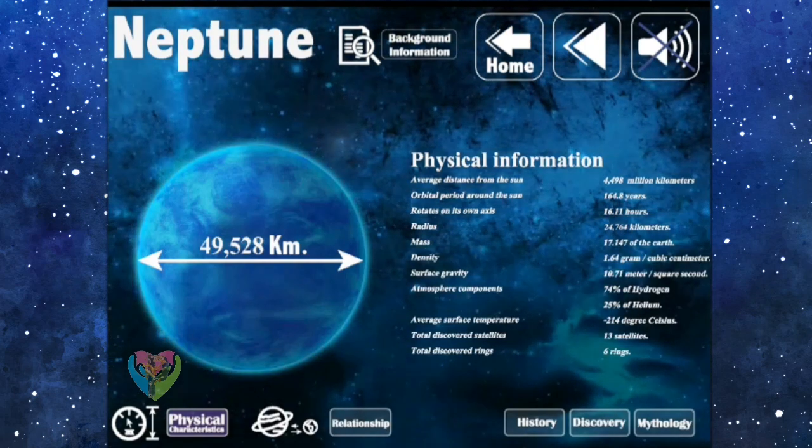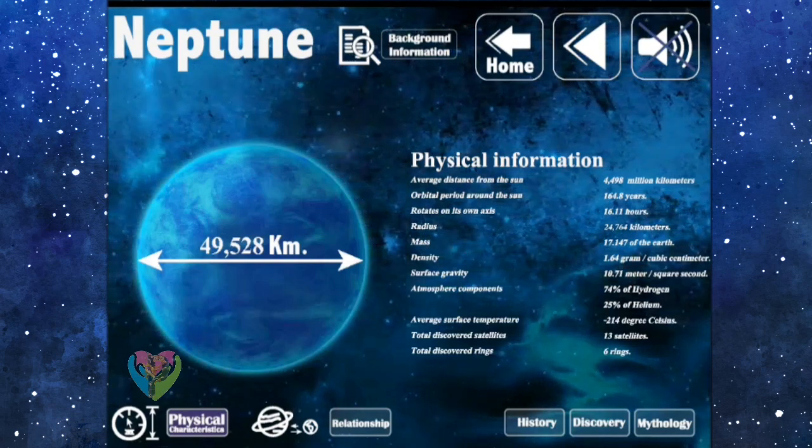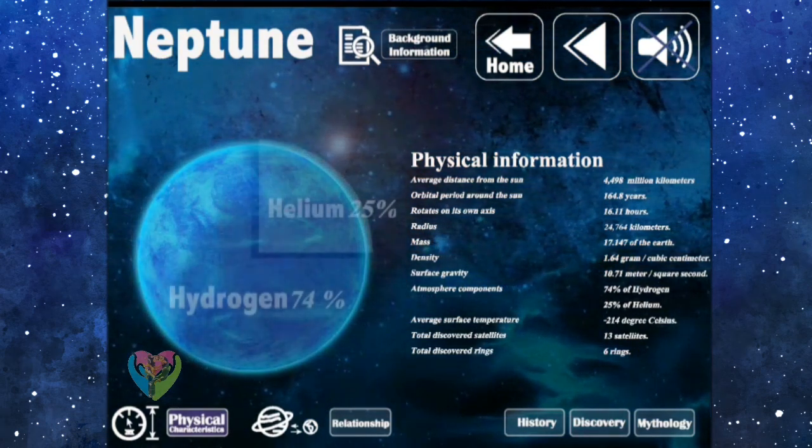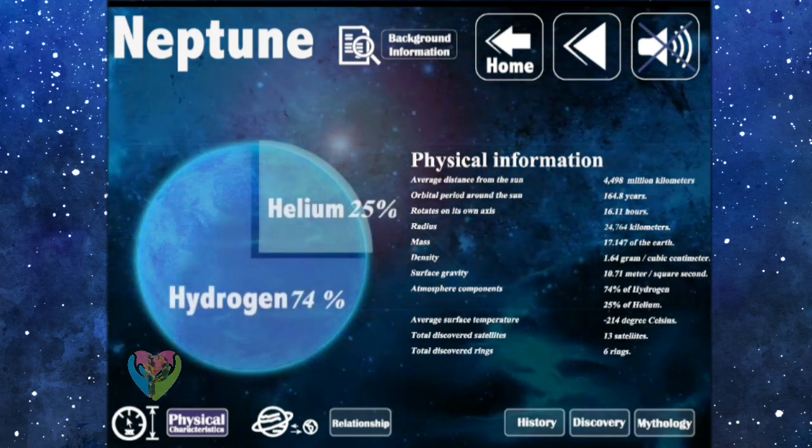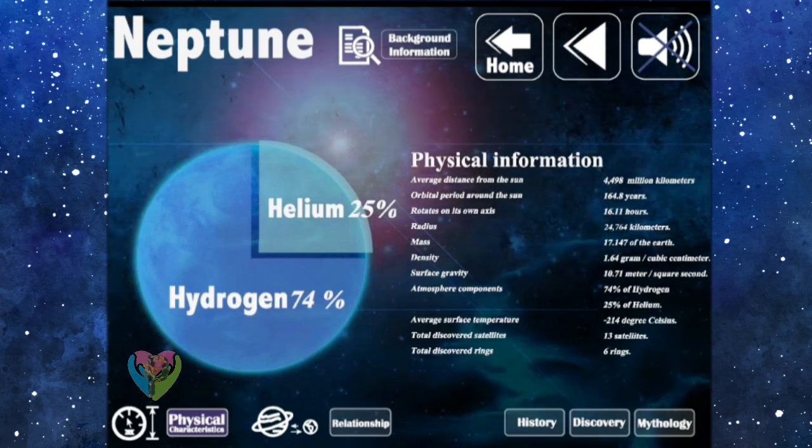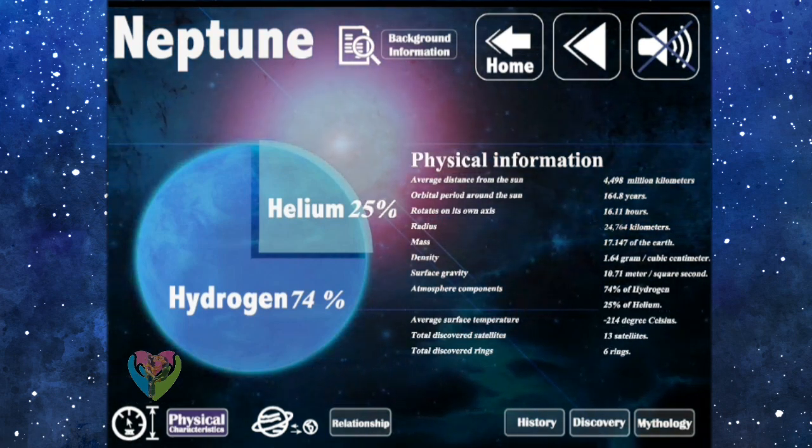The radius is 24,764 kilometers. Its mass is 17.147 times the Earth. The density is 1.64 grams per cubic centimeter. Its surface gravity is 10.71 meters per square second.